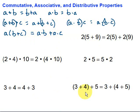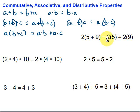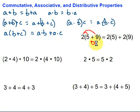Let's look at these examples and identify the property in each case. First, we've got 2 being multiplied by (5 plus 9). Over here we have 2 times 5 plus 2 times 9. What happened? 2 is being multiplied by 5, and 2 is being multiplied by 9. This is an example of the distributive property.